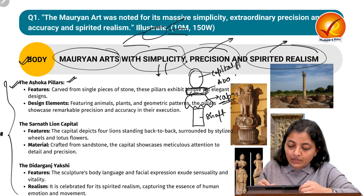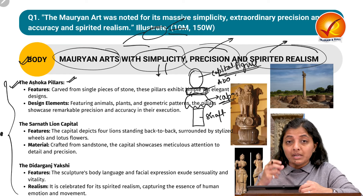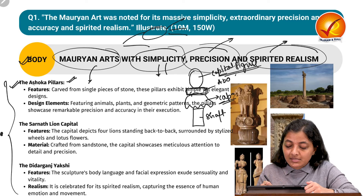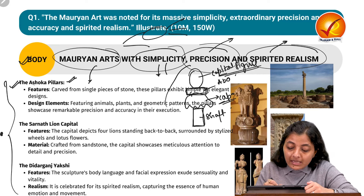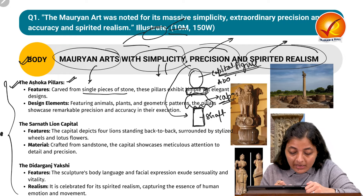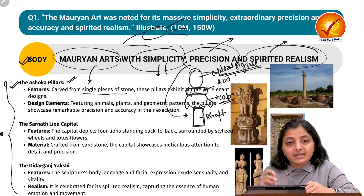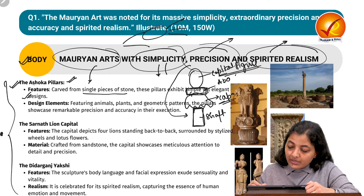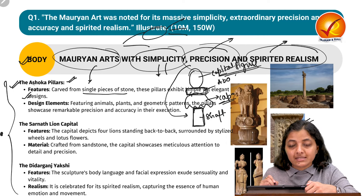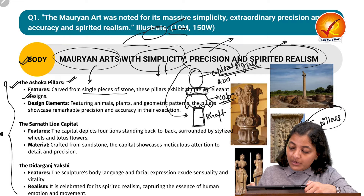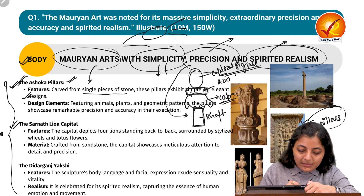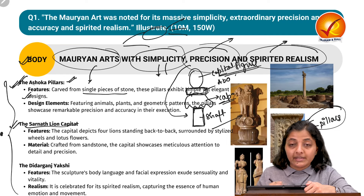For the prelims, you should know the multiple pillar edicts related to the Mauryan Empire. The Ashokan pillars exhibit simple but elegant designs — animal figures, geometrical patterns, and plant figures. You can name the Ashokan Pillar and give its features and characteristics.